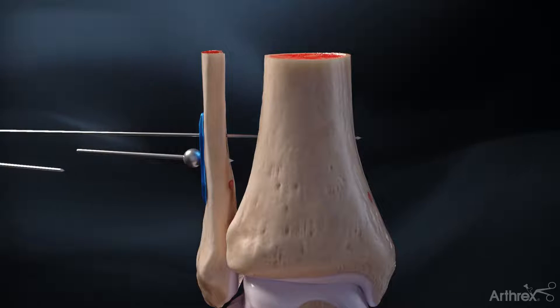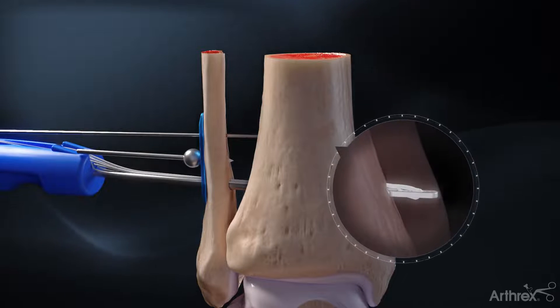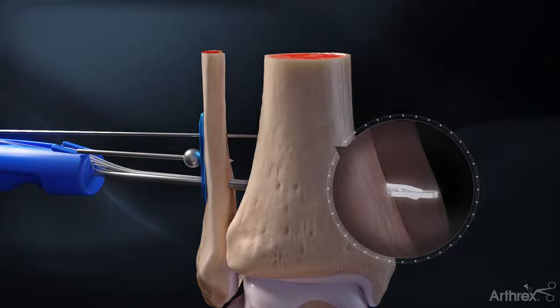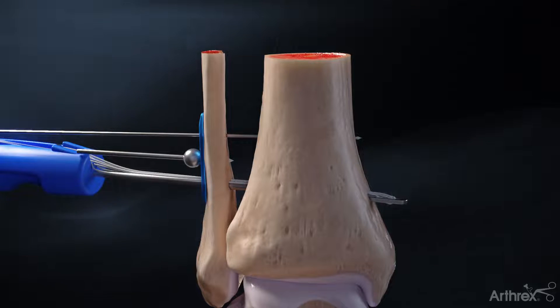Insert the tightrope XP through the fibula and tibial bone tunnel. Check under fluoroscopy to ensure the medial button exits the tibial cortex. Position the blue driver in the coronal plane or inferior superior direction.